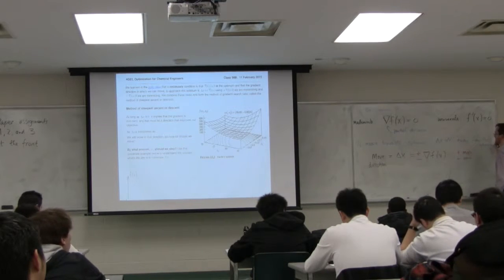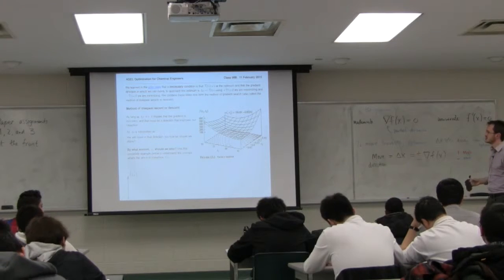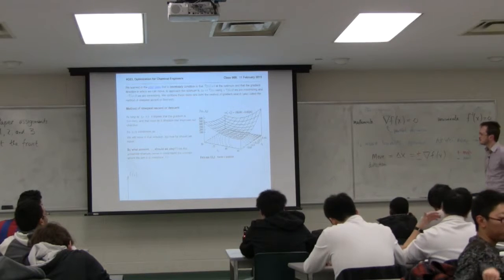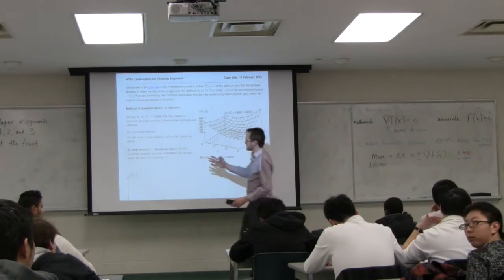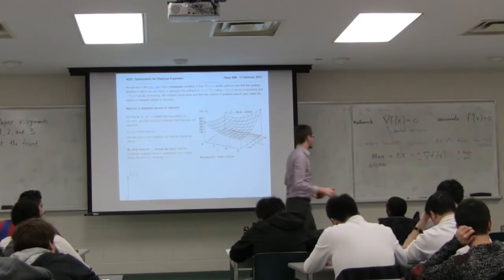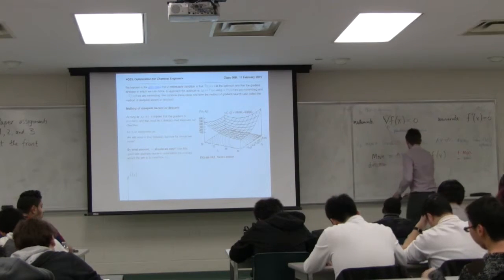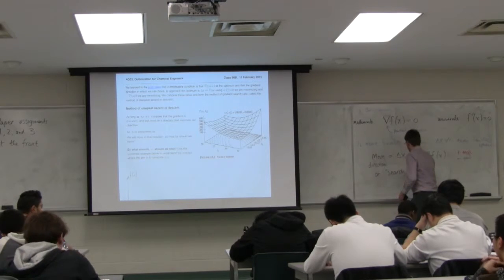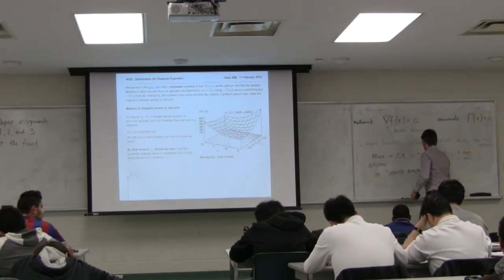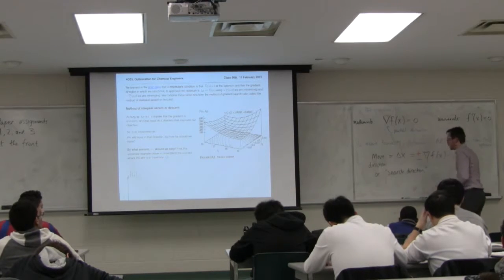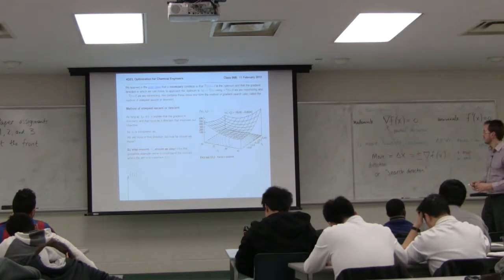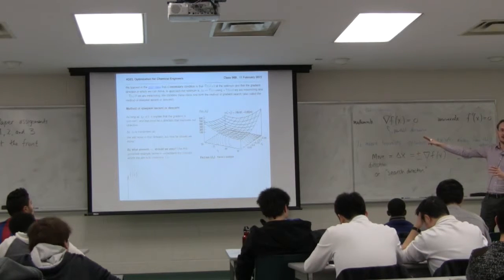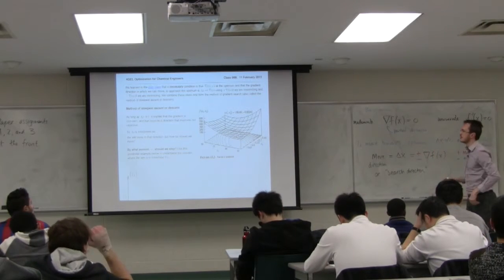So the interpretation is: as long as delta x, that move direction, is non-zero, you've not reached an optimum yet and you need to keep going. Now delta x is your move direction or search direction, as it's sometimes called. The step where we left this in class 6a on Monday was: we know that's the direction we need to go — the optimizer is telling you to go that way — but we don't know how far along to go.